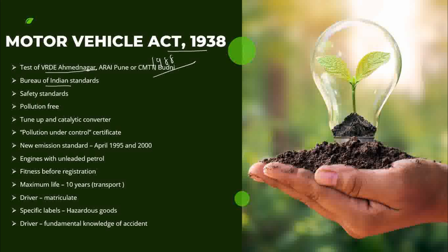Safety standards are most important for a pollution-free vehicle. Vehicles must also have a tune-up and catalytic converter to prevent air pollution. A Pollution Under Control (PUC) certificate must be obtained from the dealer every 3 to 6 months, using approved test equipment. New emission standards came into effect in April 1995 and 2000.